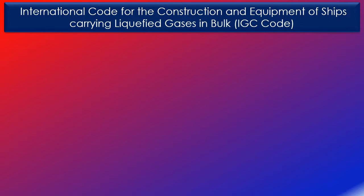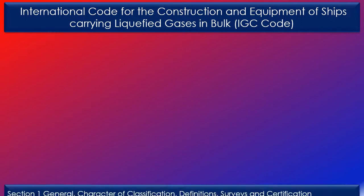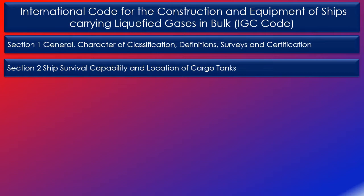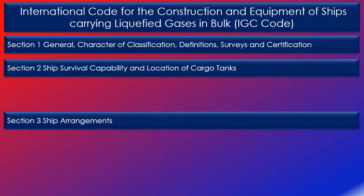The IGC Code contains 19 sections or chapters. Section 1 describes character of classification, definitions, surveys of gas ships, and certification that the ships need to carry. Section 2 on ship survival capability and location of cargo tanks sets out the requirements for minimum survival capability of a gas carrier following hull damage, and also minimum freeboard and intact stability requirements. This section also describes ship side discharges below the freeboard deck, conditions of loading, damage assumptions, location of cargo tanks, flooding assumptions, and survival requirements.